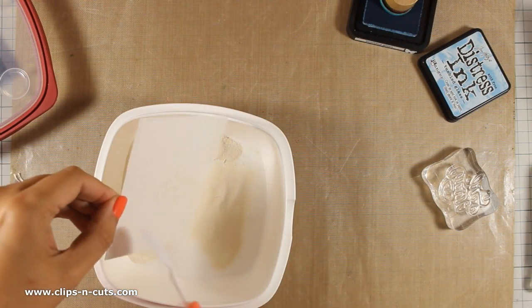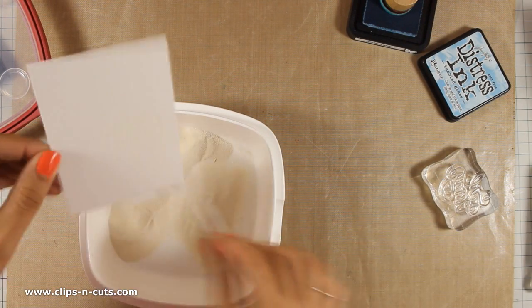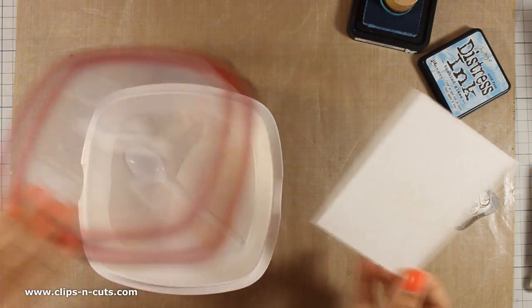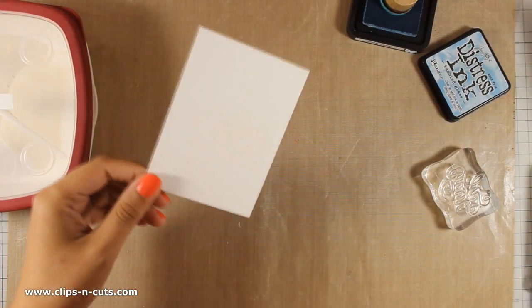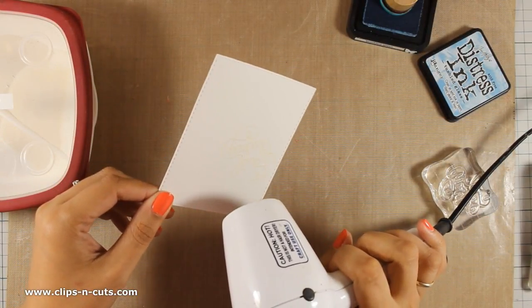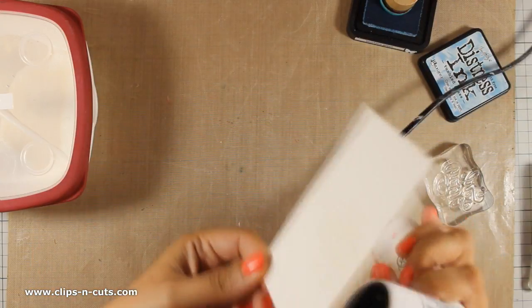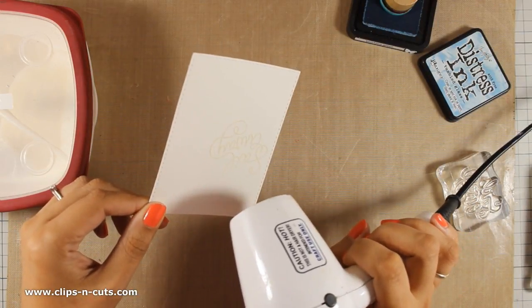I am applying white embossing powder and then I am going to use my heat tool and heat set the embossing powder. You can't see anything at the moment but once I ink up the panel you will be able to see the sentiment.